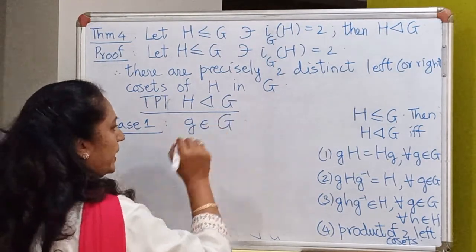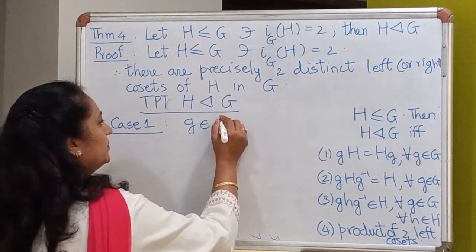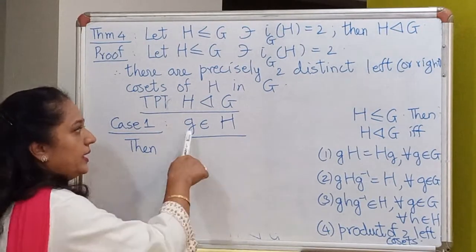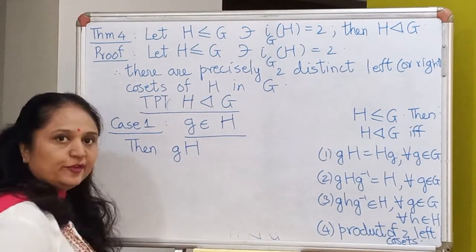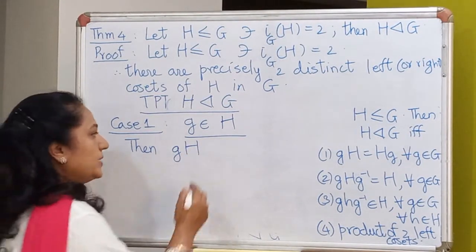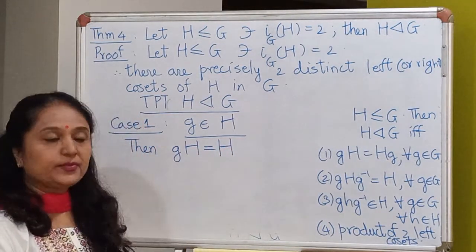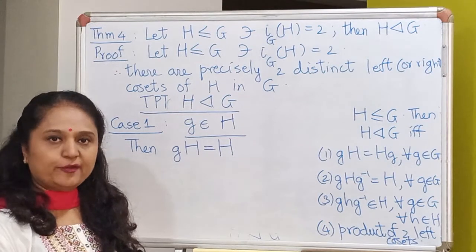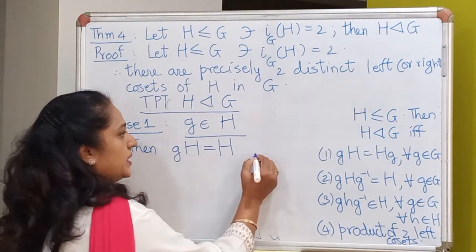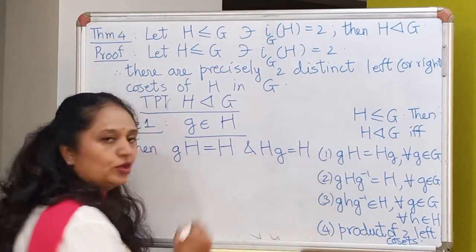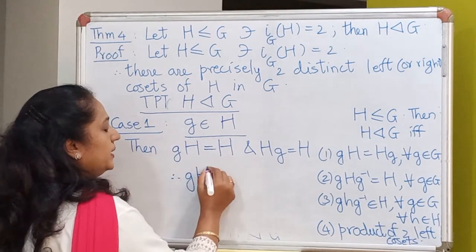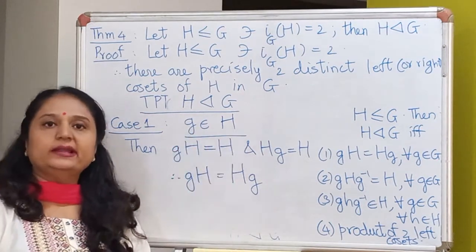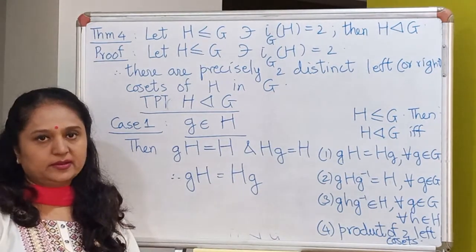Suppose the element g lies inside the subgroup H. I have already proved as a property of cosets that if an element lies inside the subgroup, then the left coset generated by that element is the same as the subgroup. Whatever properties hold for left cosets also hold for right cosets, so the right coset will also be equal to H. Therefore, automatically the left coset equals the right coset for all elements which lie inside the subgroup.